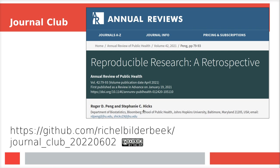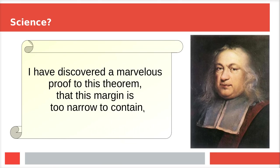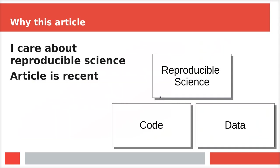I want to start with something that has always annoyed me. There's this guy who in a scientific paper wrote — I think it was in Latin — 'I have discovered a marvelous proof to this theorem, that this margin is too narrow to contain.' I often ask myself: as a scientist, can you do that? Well, in this case it was Pierre Fermat, and he definitely was a scientist. This is his Last Theorem. It's proven now, but at the time he wrote it, he didn't write it down. And I'm annoyed by not writing down the calculation.